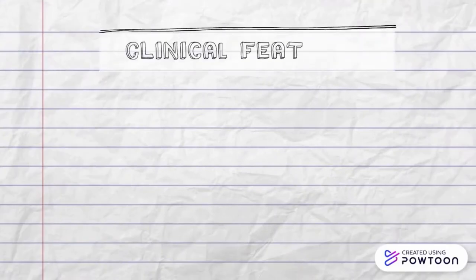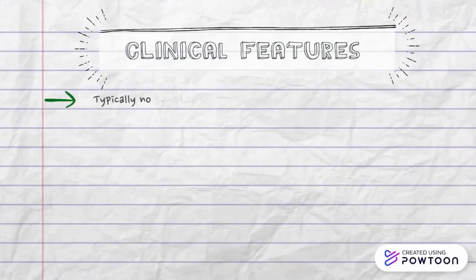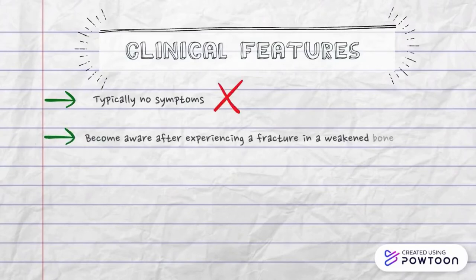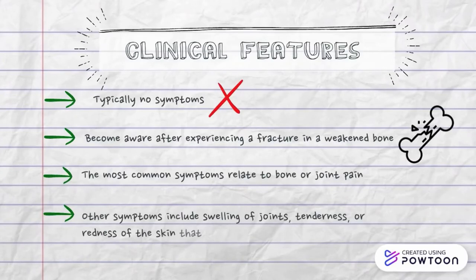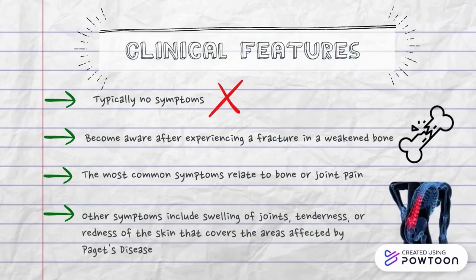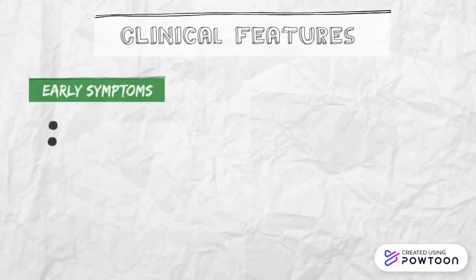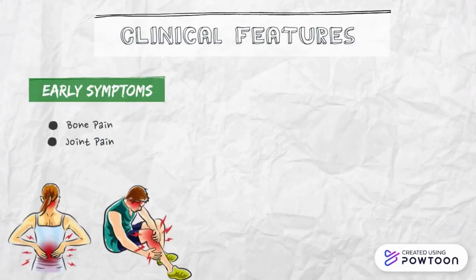Most people are not aware of the disease because there are typically no symptoms. They may become aware after experiencing a fracture in a weakened bone. The most common symptom is bone or joint pain. Other symptoms include swelling of joints, and tenderness or redness of the skin over the affected area. Early symptoms include bone pain, joint pain especially in the back, hip and knees, and headache.